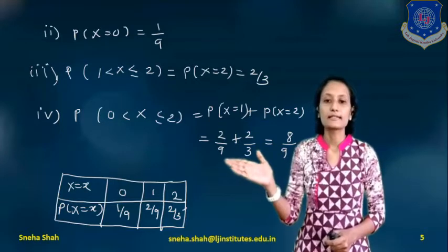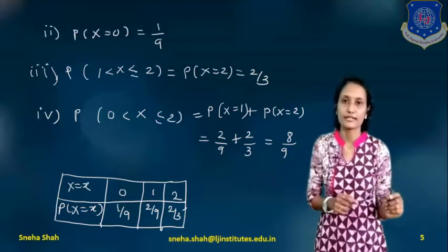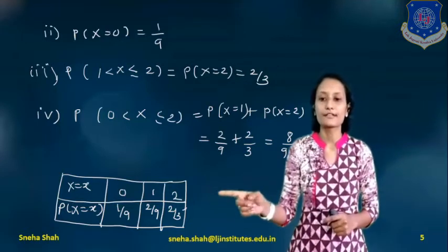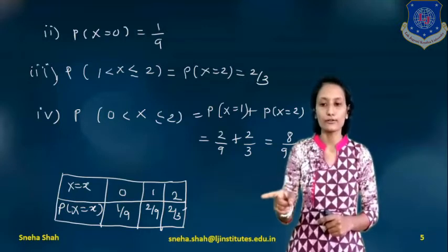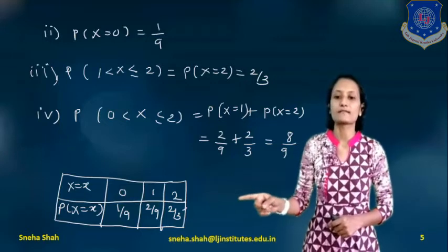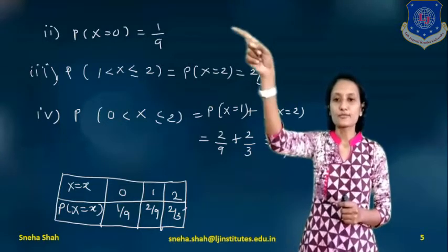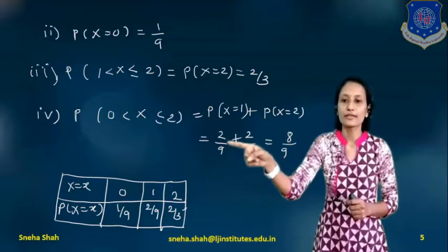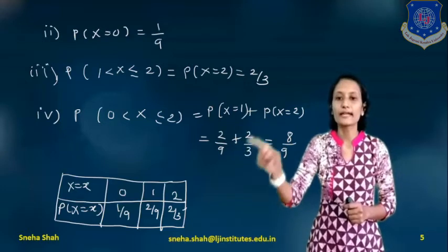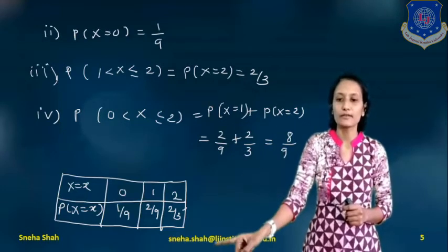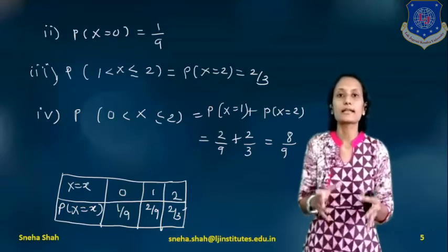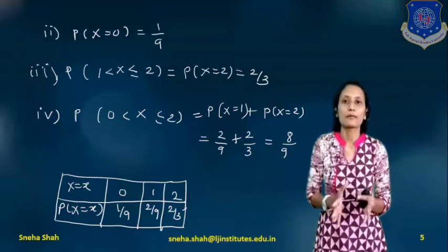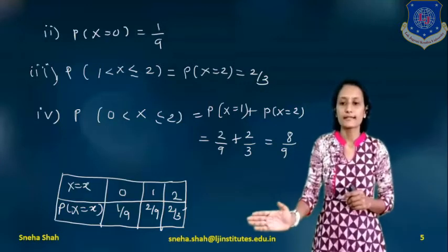Representing this as a probability mass function in tabular form: x takes values 0, 1, 2, with probabilities 1/9, 2/9, and 2/3 respectively. This tabular representation of x and P(x) is the probability mass function representation.